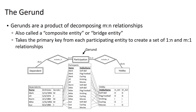Much like the weak entity, the gerund is the result of a technical thing we have to do to capture these business rules and put them in our database. It's not something that would specifically be described in the business rules or by your business person — it's something extra that we're adding for technical reasons. The gerund is also sometimes called a composite entity or a bridge entity. We're taking the primary key from each of the tables that are in the many-to-many relationship to create the gerund.